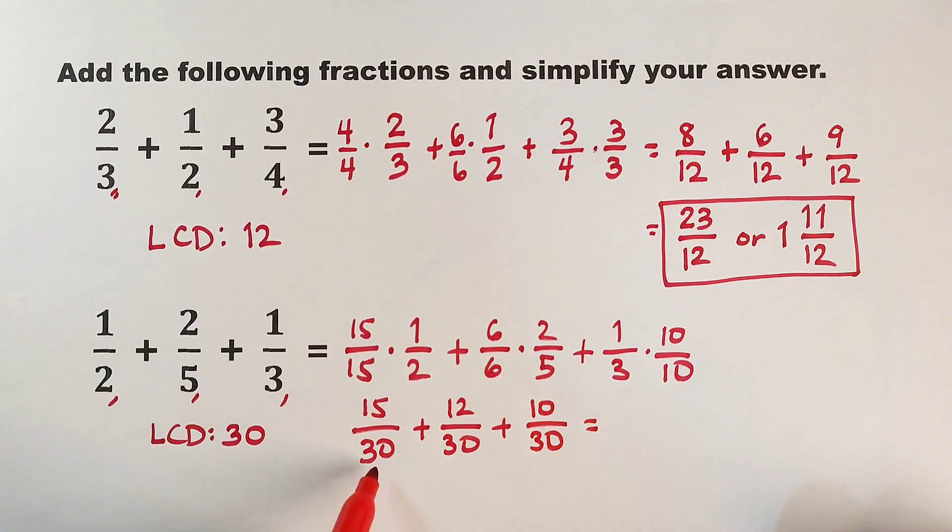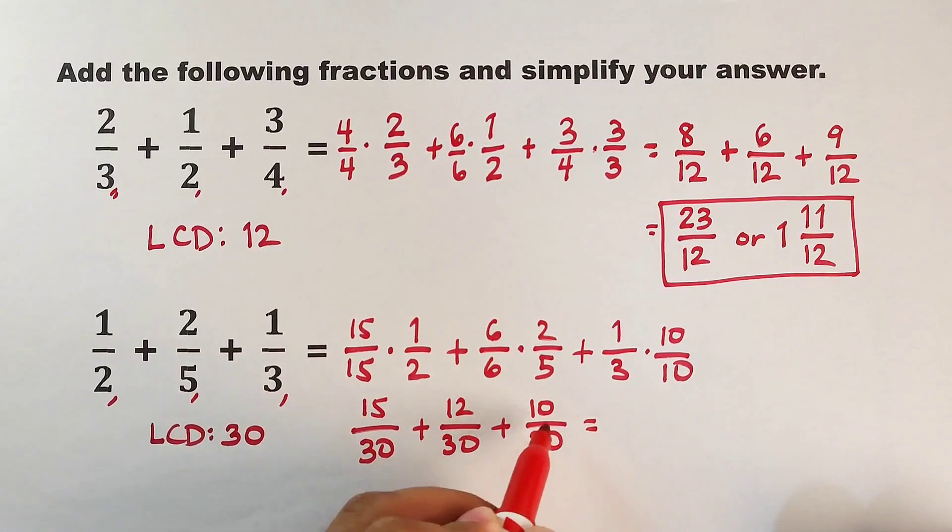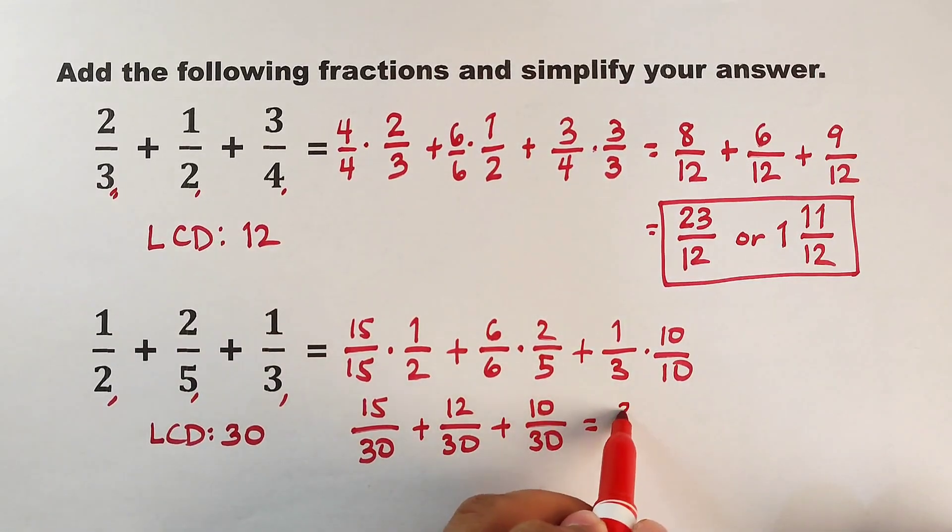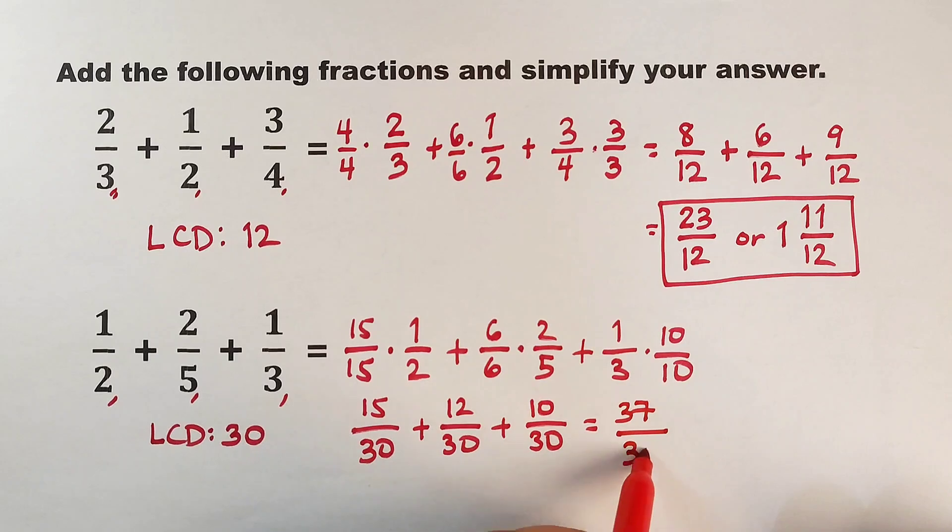Let's add the numerators since we have the same denominators. 15 plus 12, that is 27, plus 10. That would be 37 over 30.